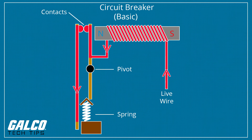The electricity magnetizes the electromagnet. Increasing current boosts the electromagnet's magnetic force, and decreasing current lowers the magnetism.